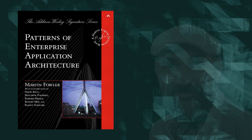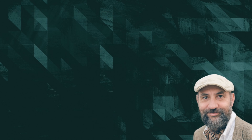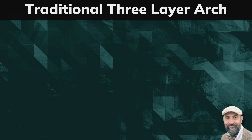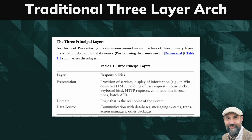Before we move on to the onion architecture, let's look at a more traditional three-layer architecture as described by Martin Fowler in his Patterns of Enterprise Application Architecture in 2002. These layers are: presentation, domain, and data source.